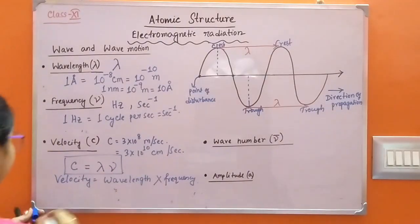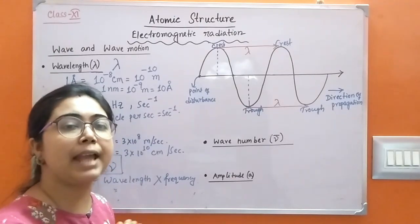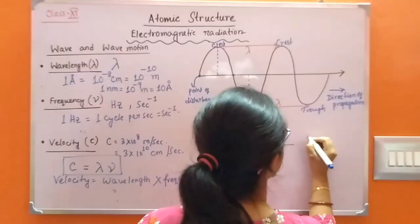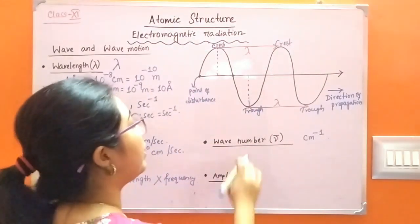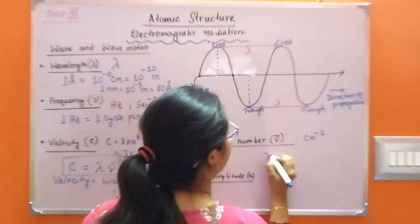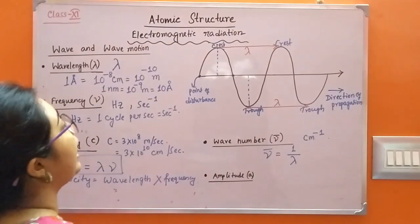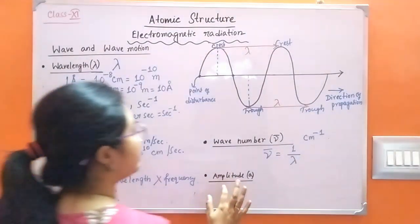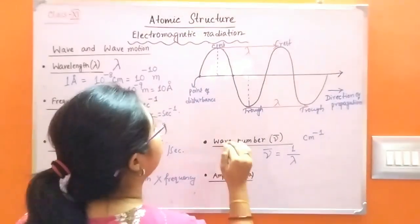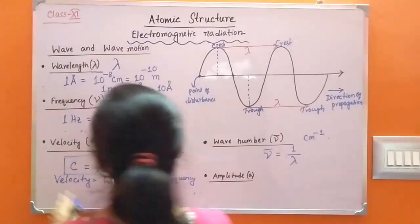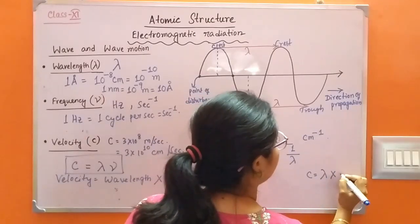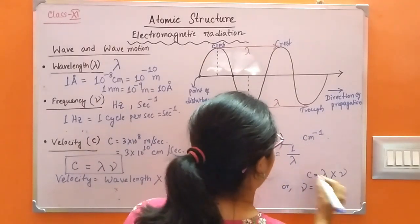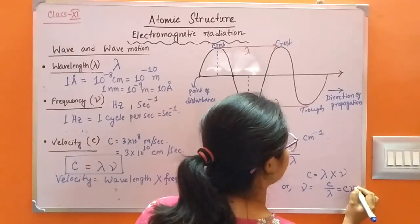This expression, C equals lambda times nu, is very important. The number of waves which can be accommodated in unit length is called wave number, represented by nu-bar, with units of centimeter inverse. Wave number is the reciprocal of wavelength, so nu-bar equals 1 by lambda. The height of the crest from the line of propagation is called amplitude, represented by small 'a', and this amplitude determines the intensity of radiation. From these relations: nu equals C by lambda, and nu-bar equals nu by C.